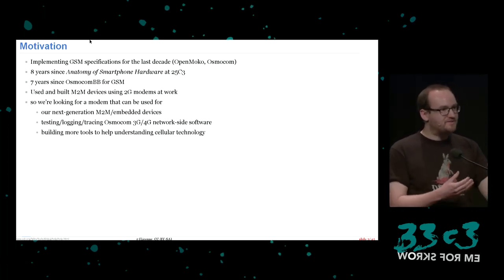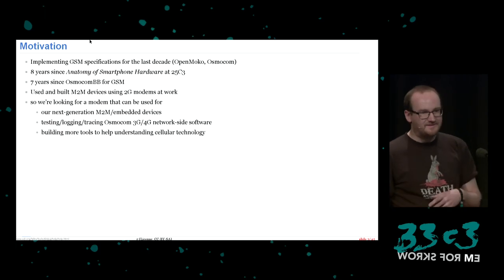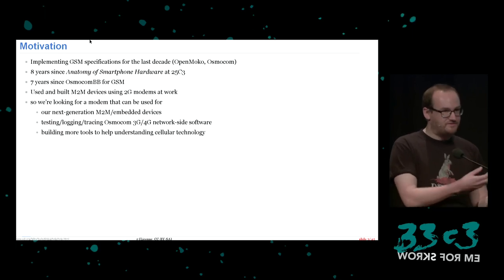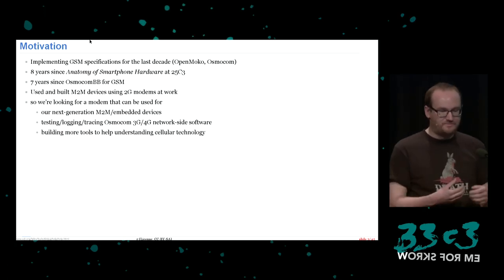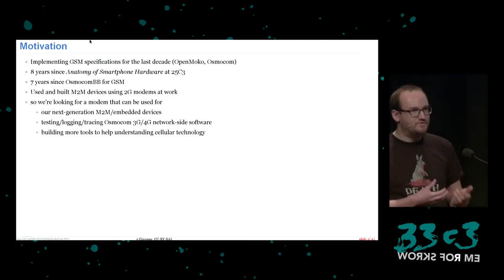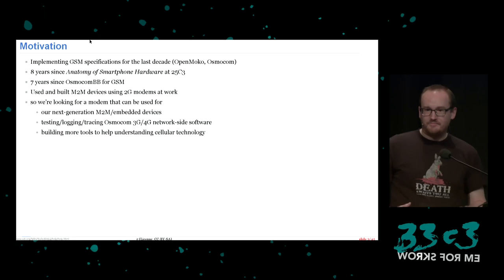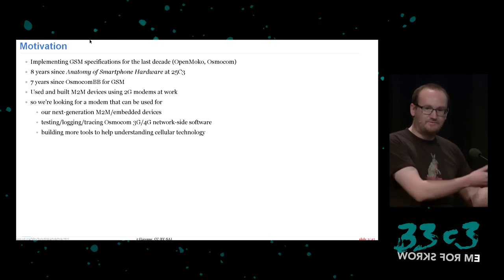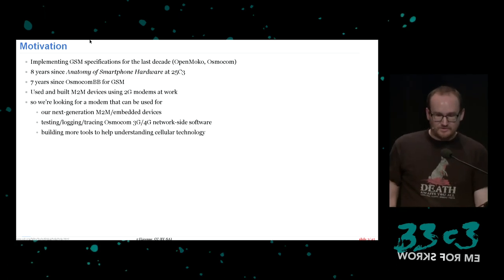When you send messages over the air and don't get a response, it's difficult to know if you encoded it correctly or if it was sent. So we looked into having a device that allows us to get logging, to see if the message arrived or throws an error, and to be able to extract traces from it. We also want to build tools to allow others to understand how cellular technology works, because while TCP/IP is well known, how IP is actually transmitted back to the core network and routed to the internet is not clear.